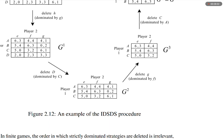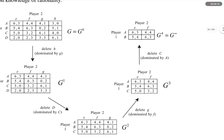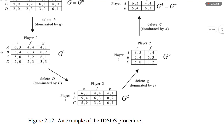The payoffs in G³ are: (6,3), (4,4); (5,4), (6,3); (5,0), (3,2). We delete C, dominated by A. We have a 2×2 grid where player 1 has strategies A, B and player 2 has strategies E, F. The payoffs are: (6,3), (4,4); (5,4), (6,3). This is G⁴ = G∞.